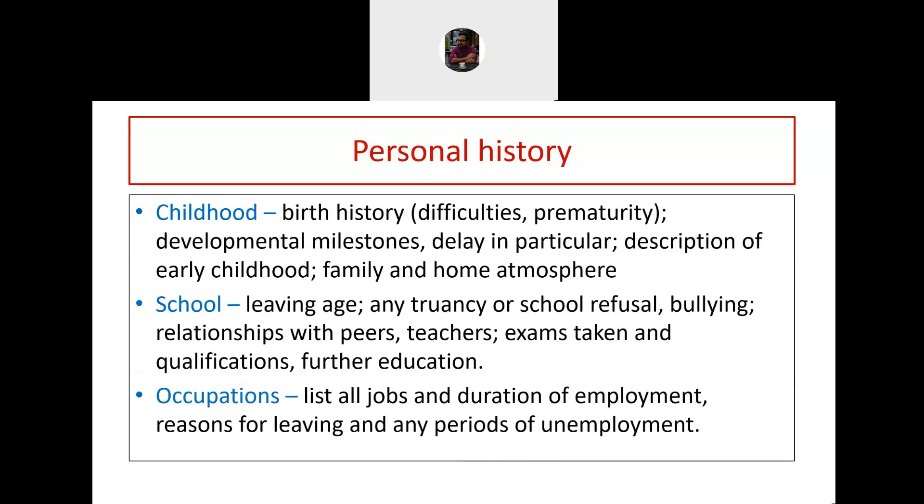Personal history is very important in psychiatry because the person as a whole has come to you for getting therapy. Take specific childhood history: whether there was any significant birth history like difficulties in being delivered or prematurity. Developmental milestones delay particularly when you are suspecting some kind of pervasive developmental disorder or mental retardation. Description of the early childhood, family and home atmosphere. Are there histories of separation or institutional upbringing? Talk about school, the leaving age, whether there was any school refusal, bullying, relationship with peers and teachers, exams taken and qualifications and further education.